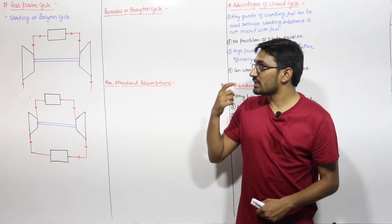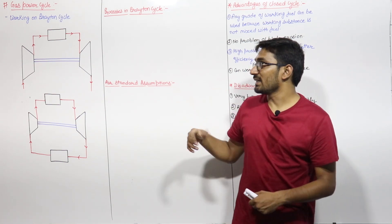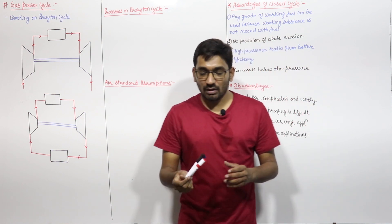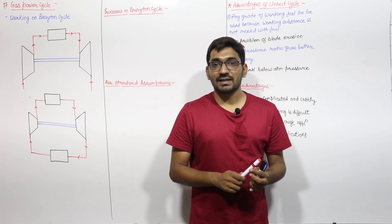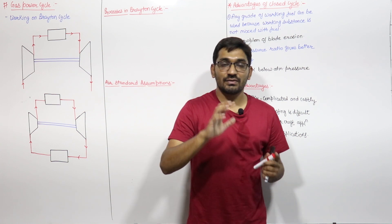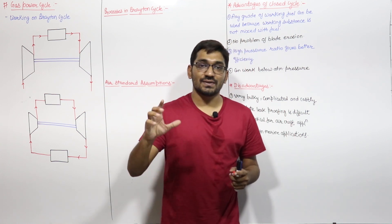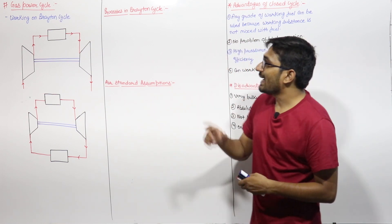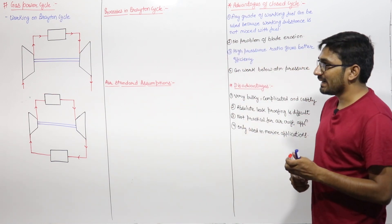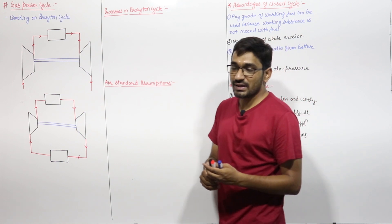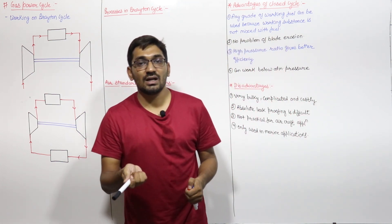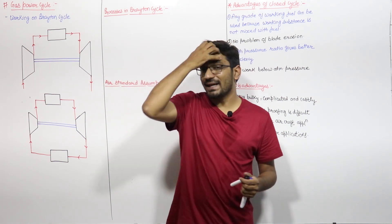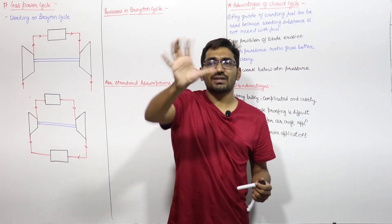Let us discuss the first power cycle, that is the gas power cycle. In the gas power cycle, the working substance will remain gas throughout the cycle. There should not be any phase change, and the gas power cycle works on the Brayton cycle. We already studied the reversed Brayton cycle in the gas refrigeration system, and now we have to study the Brayton cycle — we just have to reverse the cycle.